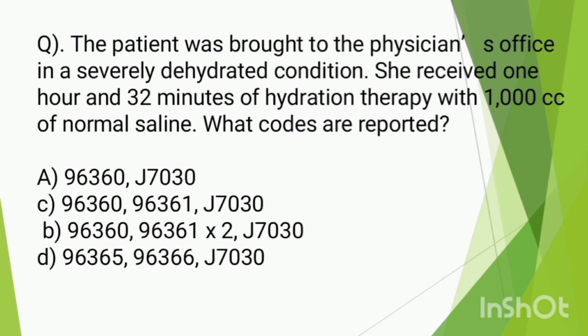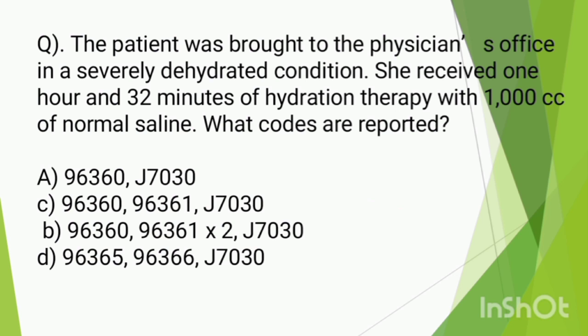Option A is 96360 — intravenous infusion, hydration, 31 minutes to 1 hour. We eliminate option A since the therapy is 1 hour and 32 minutes. Option B uses 96360 and 96361 x2. The first hour uses 96360, and the remaining 32 minutes use 96361. The answer is C: 96360 for the first hour and 96361 for the additional time.